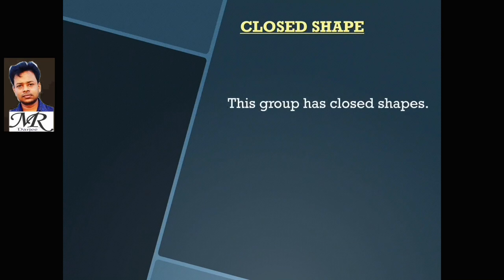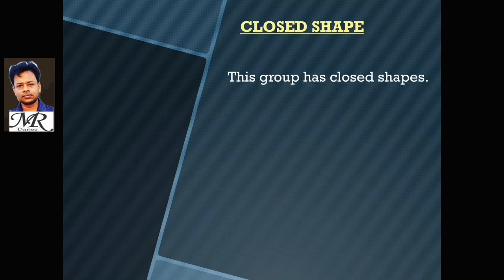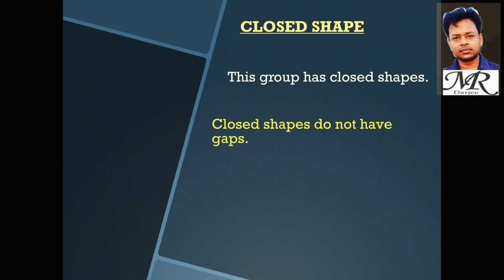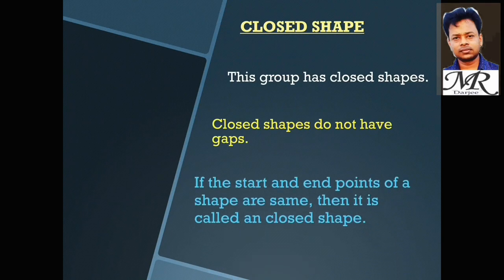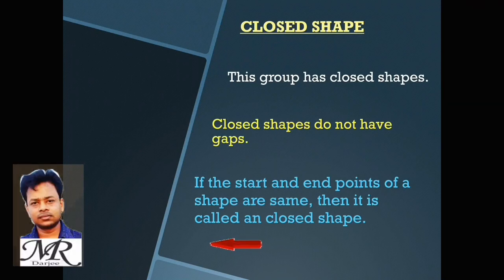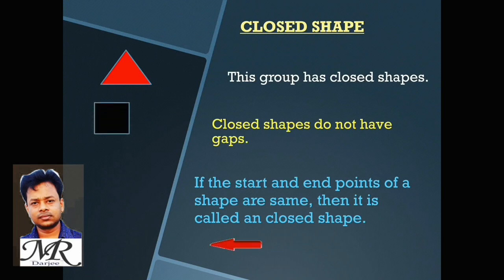Now some closed shapes. This group has closed shapes. Closed shapes do not have gaps. If the start and end points of a shape are the same, then it is called a closed shape. These are examples of closed shapes.